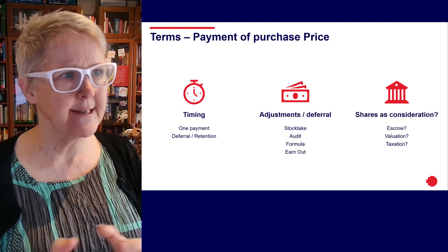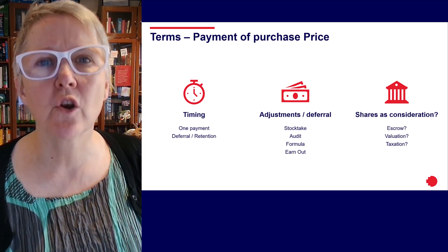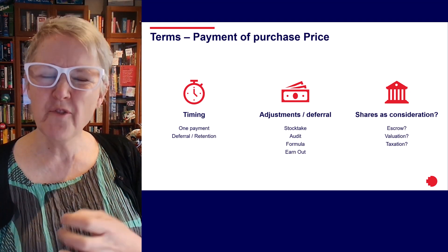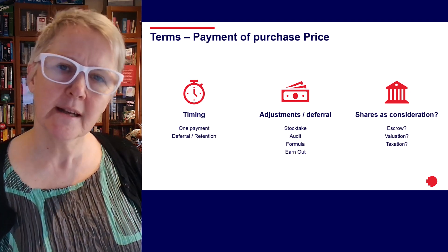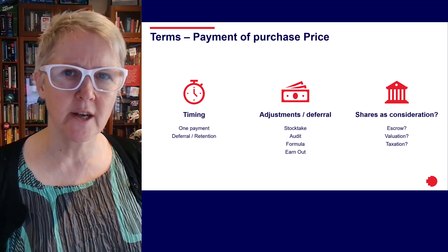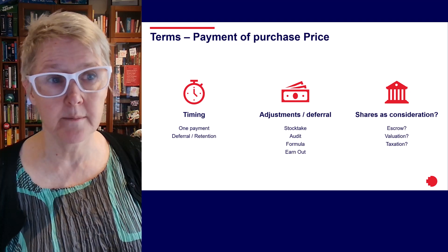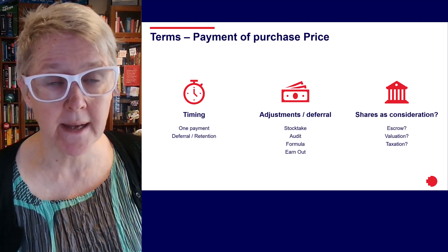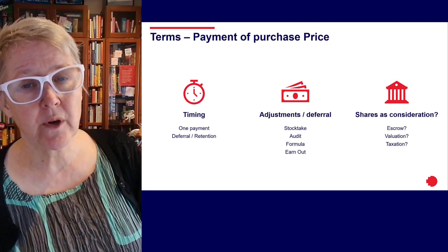Purchase price clauses often include adjustment provisions, particularly when there is a deferral. If you look at the Encyclopedia of Forms and Precedents and examine some of the options for pricing clauses, you'll see that often there's a stock take — a point in time where value is ascertained, particularly for a trading business — and some kind of formula for allocating those adjustments between the parties. These might include accrued employment entitlements or amounts the business can expect to receive from payment on invoices.